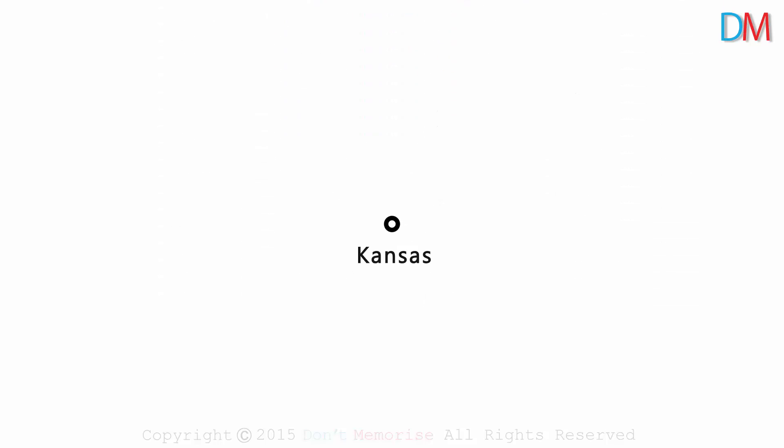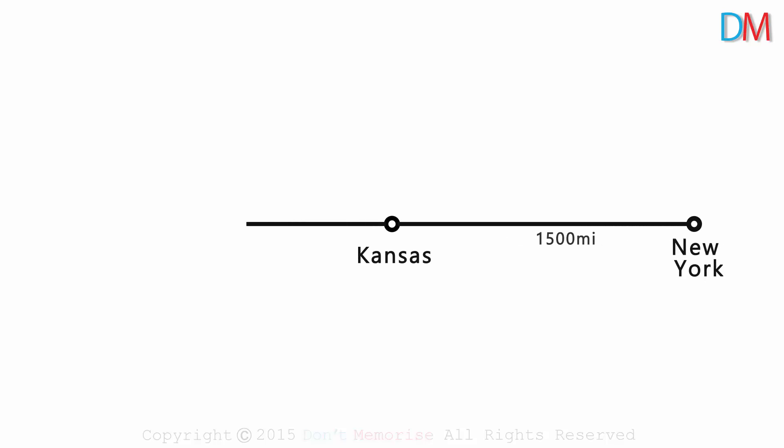Let's say you are based in Kansas. You have New York 1500 miles to the east and California 1500 miles to the west.